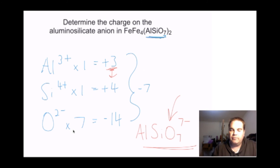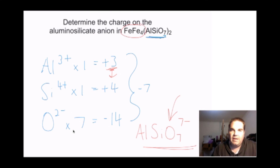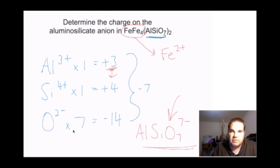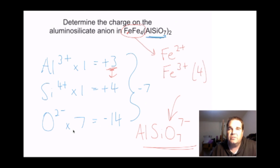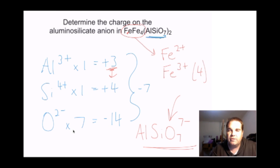If you see a formula with Fe Fe in it, it's not a mistake. It's made up of Fe 2-plus (ferrous ions) listed first, and Fe 3-plus listed second — there are 4 of the second type. So when both iron oxidation states appear, the first is 2-plus and the second is 3-plus.